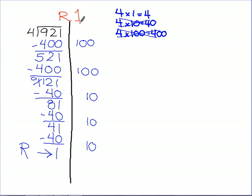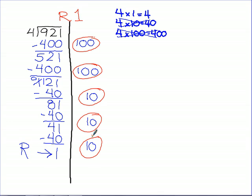In order to find out what my quotient is, I need to take 100 plus 100 plus 10 plus 10 plus 10 and add those all up. What's 100 plus 100? 200. Plus 10? 210. Plus another 10? 220. Plus another 10? 230. So this is 230, and I get 230 with a remainder of 1.